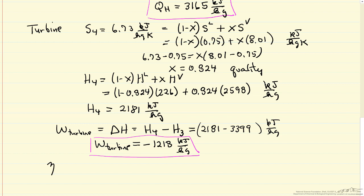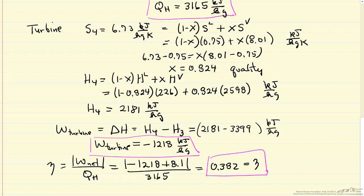So now our efficiency, which is the network, absolute value over QH. Network is the work we get out from the turbine plus the work that we have to put in to pressurize the water, the energy for the pump. Absolute value of that divided by 3165 for QH. These are all kilojoules per kilogram. 0.382. So that's the efficiency that we wanted to calculate. Only 38% of the energy that we put in the boiler in the form of heat, we get out net in the form of work that we can then use.